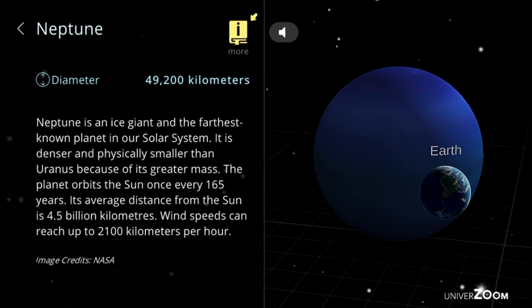Neptune, diameter: 49,200 kilometers. Neptune is an ice giant and the farthest known planet in our solar system. It is denser and physically smaller than Uranus because of its greater mass. The planet orbits the Sun once every 165 years. Its average distance from the Sun is 4.5 billion kilometers. Wind speeds can reach up to 2,100 kilometers per hour.